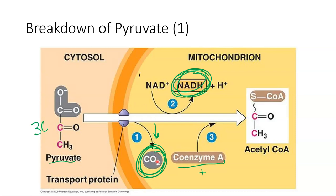The first carbon you lose comes from pyruvate in the second step of cellular respiration — we go from three carbons to two. Those remaining two carbons actually combine with coenzyme A to form acetyl-CoA. The three-carbon molecule is called pyruvate; once it loses a carbon dioxide, it becomes a molecule called acetyl. We then add coenzyme A on top of the acetyl, so you end up with acetyl-CoA.